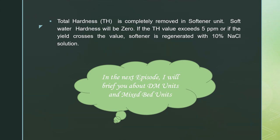Total hardness present in raw water is completely removed in the softener unit. Soft water hardness is zero, and if total hardness exceeds 5 ppm or yield crosses the stipulated value, the softener is regenerated with 10% sodium chloride solution. This episode has covered the initial stages of water treatment: pressure sand filter, activated carbon filter, and softener unit. The next episode will cover the demineralization and mixed bed units.